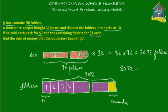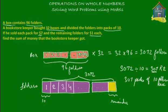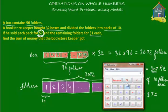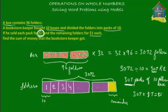He had 3072 folders and he divided them into packs of 10. That gives 307 remainder 2. So there were 307 packs of 10 folders each. Each of the 307 packs was sold for seven dollars, so the bookstore keeper made 307 times 7, which equals 2149 dollars from selling the packs.